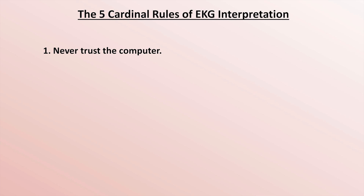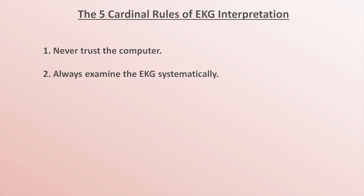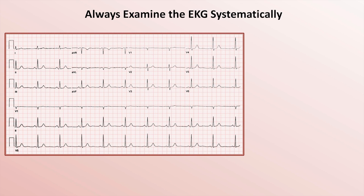Rule number two: always examine the EKG systematically. I have another video talking about my preferred systematic method in more detail, but here's a brief overview using this EKG as an example. Step one in the systematic method is to identify the rhythm. There are five parts to this. Part A: is the rhythm fast, slow, or normal? In this example, it's about 60 beats per minute.